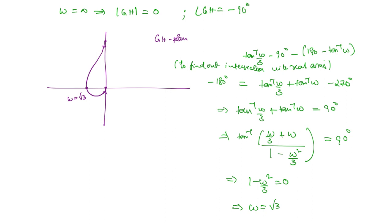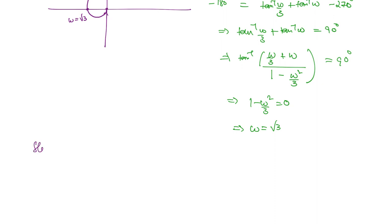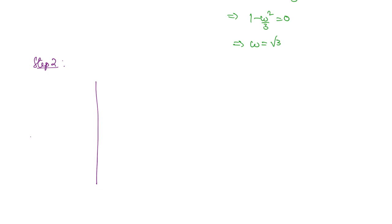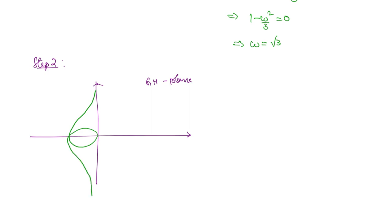Step 2 is to draw the mirror image of this polar plot about the real axis. The plot comes from a point on the upper half, goes to the origin, then mirrors back. We label: ω tending to 0+ on the upper side, ω tending to +∞ where the polar plot ends, ω tending to −∞ on the mirror side, and ω tending to 0− coming back.